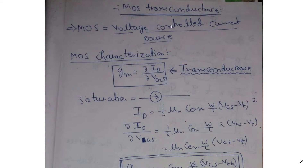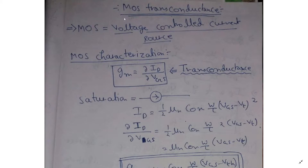Why transconductance? "Trans" signifies change in output current with respect to change in input voltage — output by input means "trans." You have already studied transfer characteristics, whether in control systems or semiconductors: when we plot V-output with respect to V-input we call it a transfer characteristics graph. Similarly, here we are measuring how much change in current on the output side occurs with respect to a change in input voltage. So output current divided by input voltage gives conductance, and since it is output by input, it is "trans" — hence transconductance. So we have the idea that some parameter — transconductance — should exist for MOSFET which gives us the quality of the device.